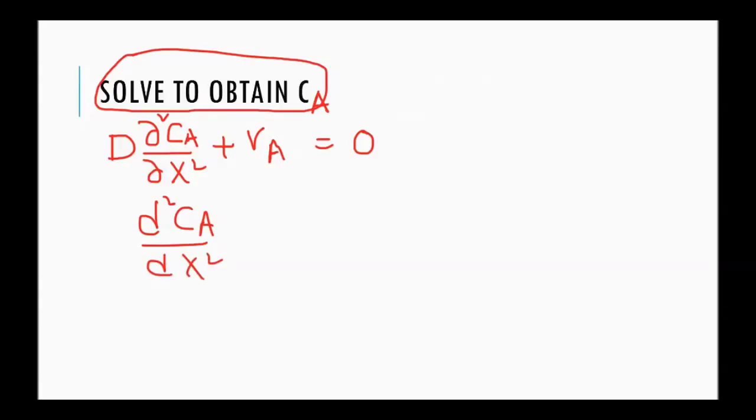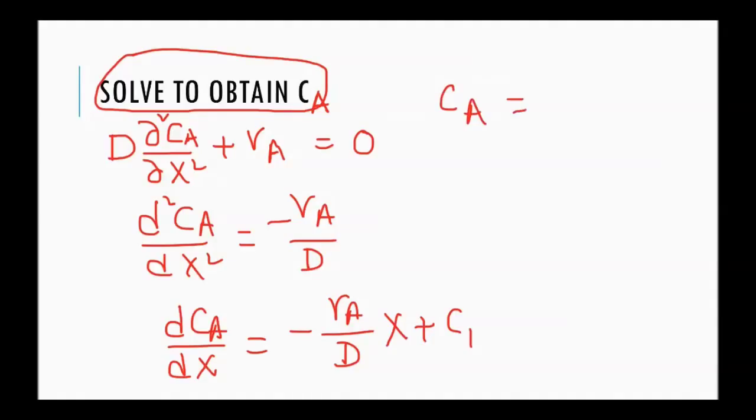So, we write d square ca dx square equal to minus ra over d. So, d ca over dx is minus ra over dx plus c1. And so, ca is equal to minus ra over dx square over 2 plus c1x plus c2. Where c2 and c1 are the constants of integration that we have to find by plugging in the boundary conditions.